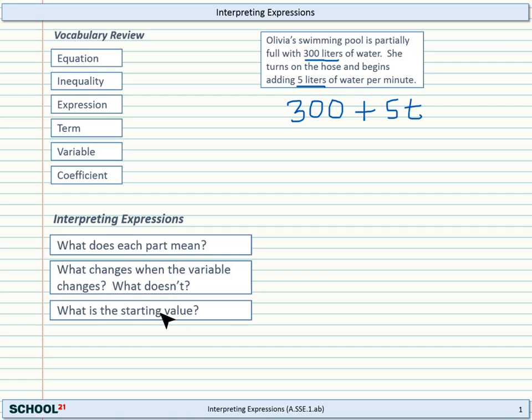And finally, what is the starting value? Well, that's kind of given in the problem here. So we know that it's 300 liters. But if we were just given this expression without an explanation of the problem, we could still find the starting value. Because the starting value is always when time equals 0. So if T equals 0, then 5 times 0 will also equal 0. And this entire term will go away. So then we know that the starting value is 300.